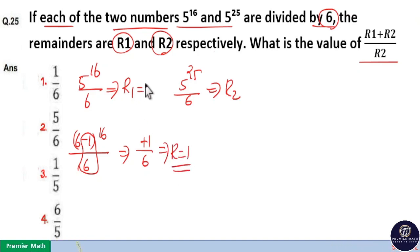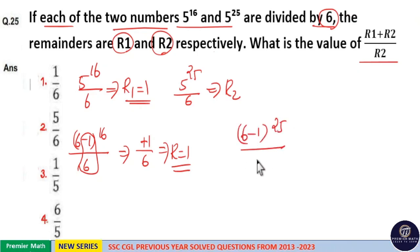Same way 5 raised to 25. So I will write it as 6 minus 1. 6 minus 1 raised to 25 divided by 6.